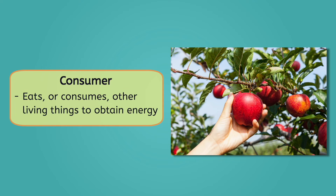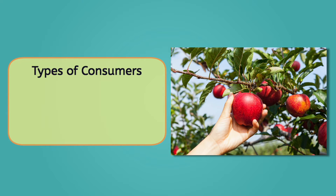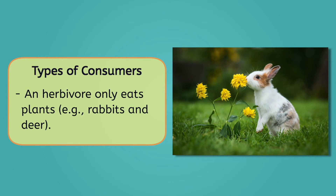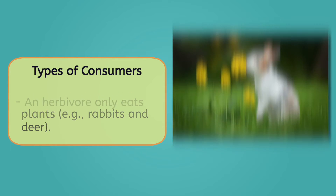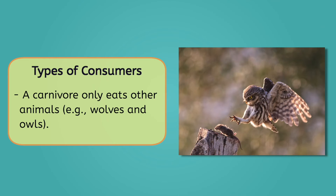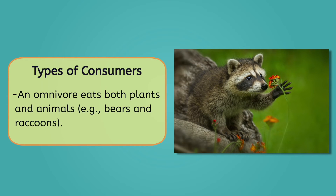This brings us to our next role: the consumer. A consumer eats or consumes other living things in order to obtain energy and food, since they can't make their own. There are several kinds of consumers. A herbivore is a type of consumer that only eats plants — some examples are rabbits or deer. A carnivore is a type of consumer that only eats meat, such as a wolf or an owl. There are also some animals called omnivores that eat both plants and animals, such as bears and raccoons.